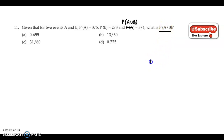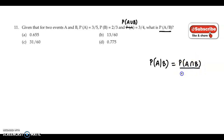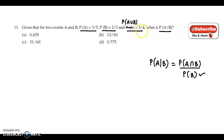Probability of A given B ka jo formula hota hai, woh hai probability of A intersection B upon probability of B. Ab humein probability of B ki value provided hai, toh humein intersection ki value dhunni hai, aur woh milegi in teen probabilities ke help se: P of A, P of B, P of A union B. Toh intersection hum dhunenge with the help of addition theorem.